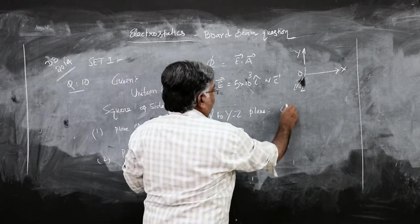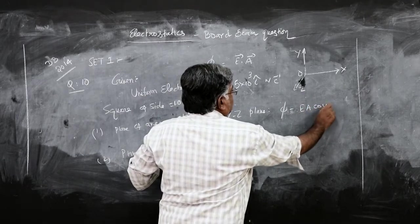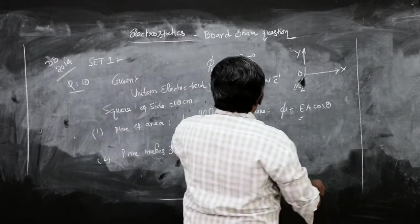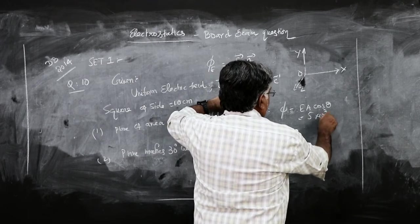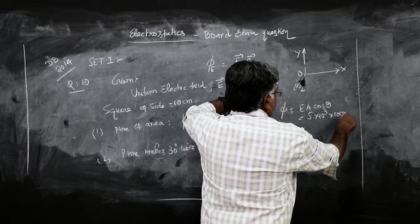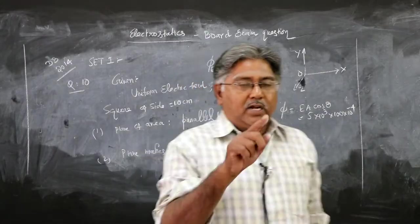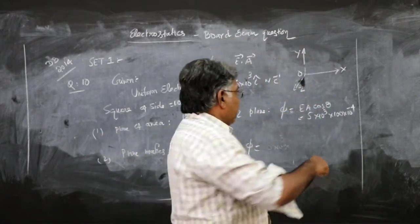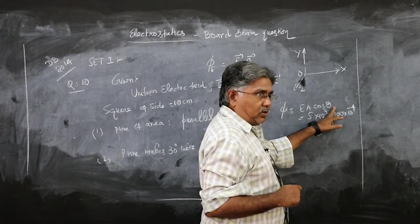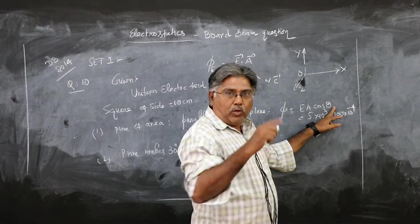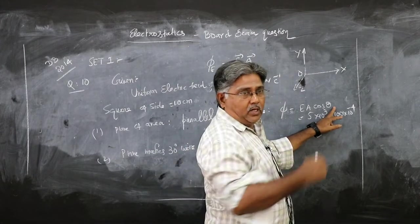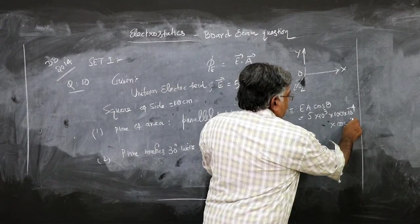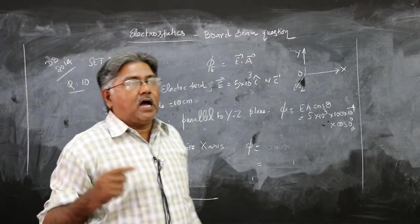In the first case, electric flux is E·A·cos θ. E dot A on expanding gives you E·A·cos θ. Electric field magnitude: 5 × 10³. Area: 100 × 10⁻⁴. One centimeter is 10⁻² meter, one centimeter squared is 10⁻⁴ meter squared, so multiply by 10⁻⁴. Cos 0 because the plane of the square is in y-o-z or parallel to y-o-z plane, so it will have an area vector parallel to x-axis. Therefore cos 0, the angle between area vector and the electric field is 0 degrees.